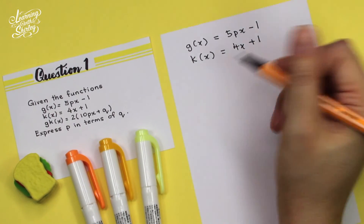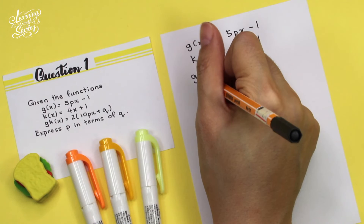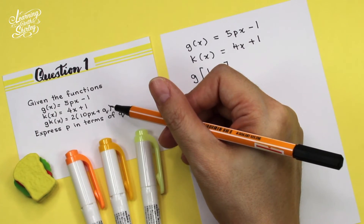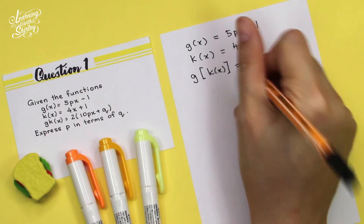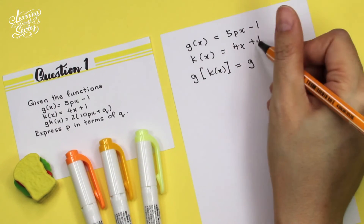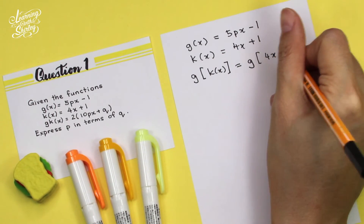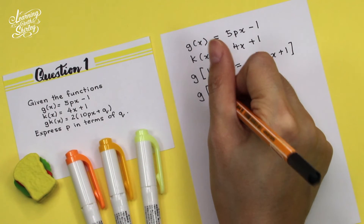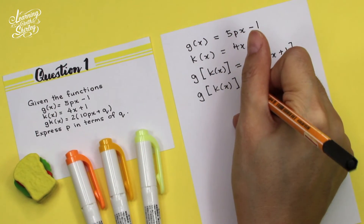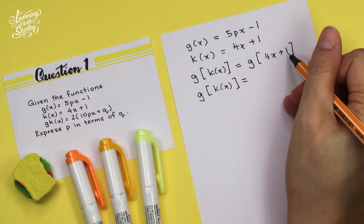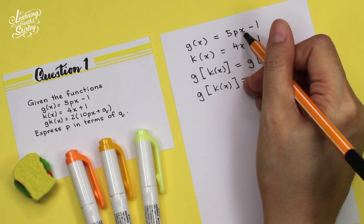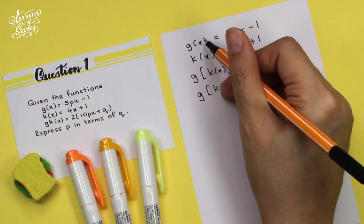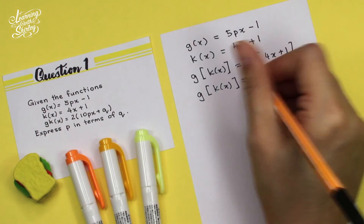Next, we try to make our own version of GK(x), and then later we compare it with the GK(x) given in the question. So G will be on the outside, and K(x) is 4x plus 1. Looking at function G — when it's X inside the bracket, here will be X. If it's Y inside the bracket, here will be Y. So if it's 4x plus 1 inside the bracket, here will be 4x plus 1.